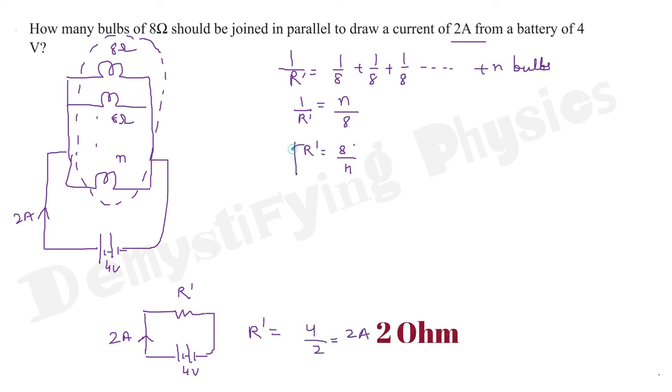Now, equate these two values. 8 by N is equal to 2. So, N is equal to 4. That means 4 bulbs should be connected in parallel.